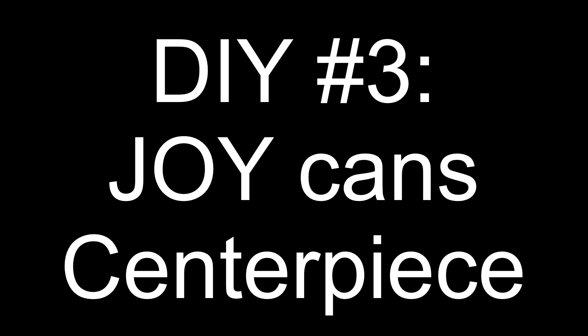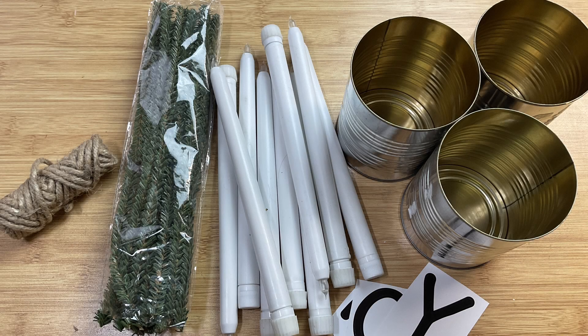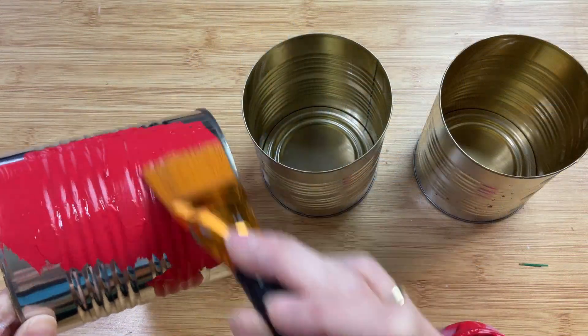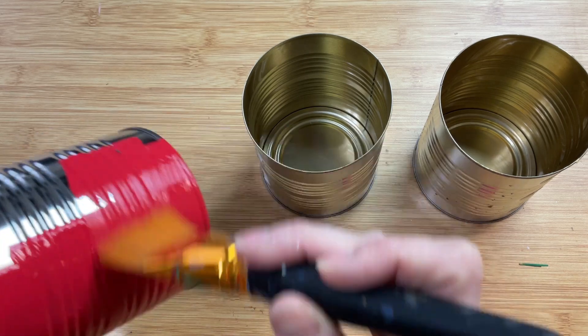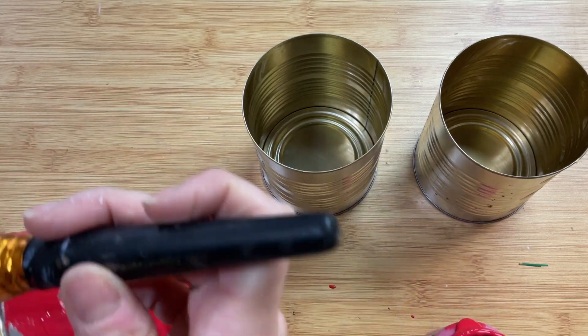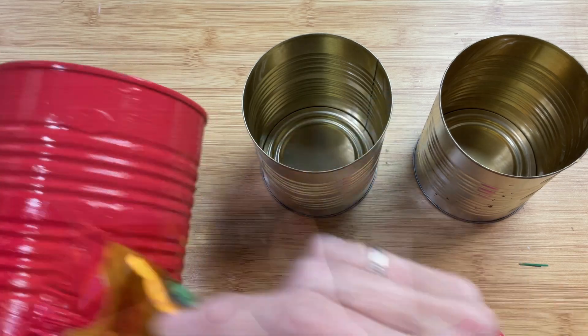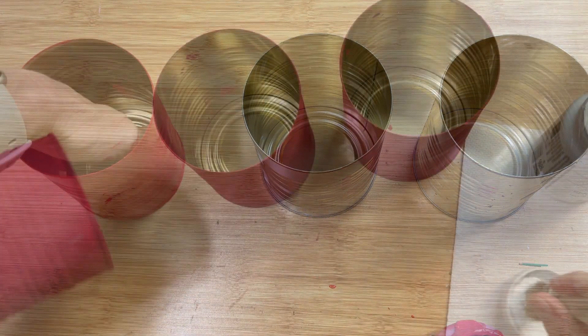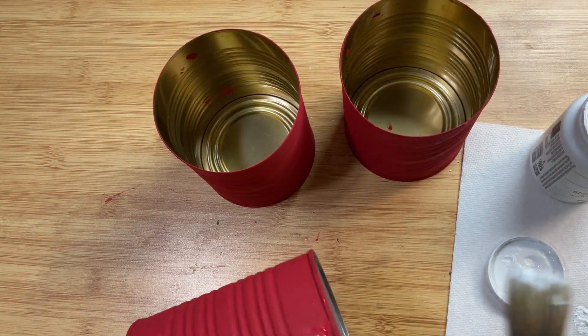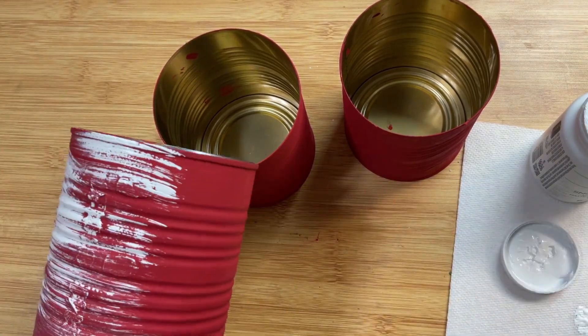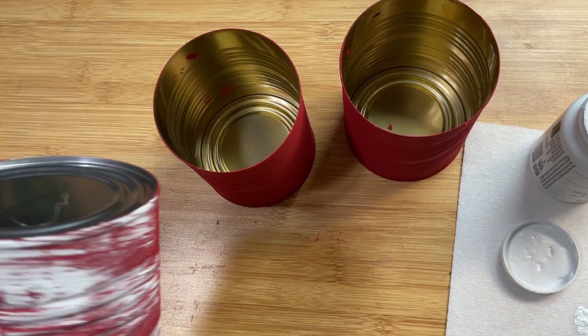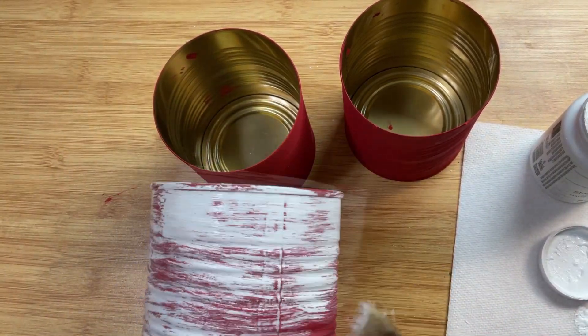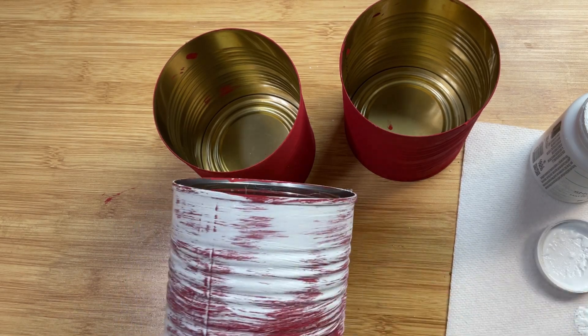For DIY number three we're going to make another centerpiece using some recycled cans, some of these tall battery powered taper candles from Dollar Tree as well as some stickers. So I'm going to take three more of these cans and I'm going to give them a coat of my Waverly chalk paint in the color crimson. We're going to paint all three cans and let them dry completely. Once they're dry I'm going to take my chippy brush and I'm going to just dry brush or messy paint whatever you want to call it white so that you can still see the red coming through but the color of the cans now is mostly white.